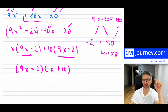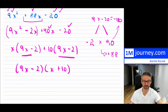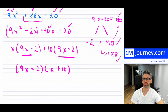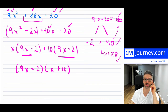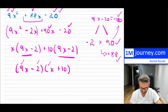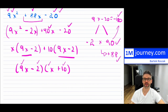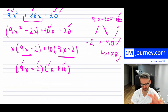One word of caution: this doesn't always work. You can't always find two integers that multiply to A×C and add to B — sometimes the numbers are not nice. In those cases you'll need a different method. This technique works when the constants within the factors are integers; it depends on what you are studying.